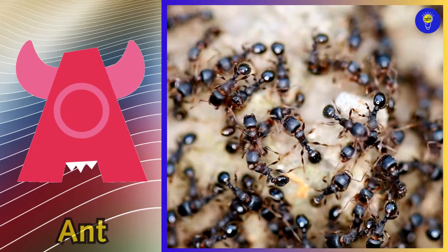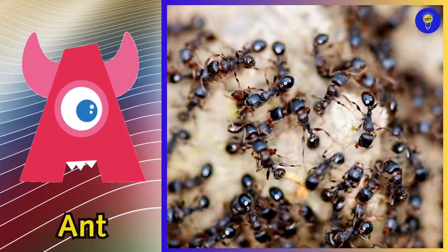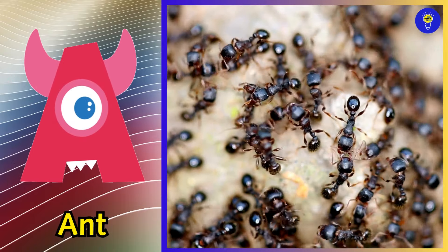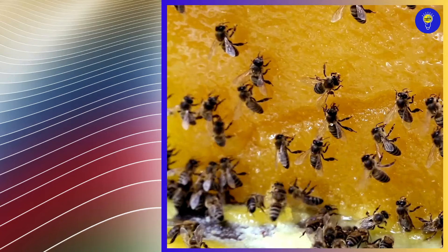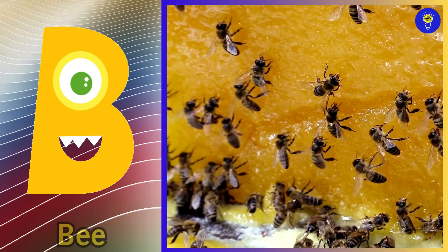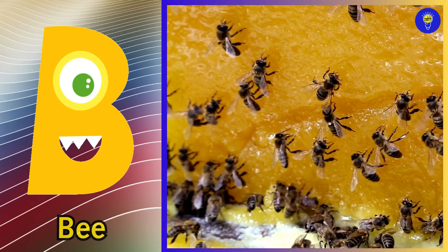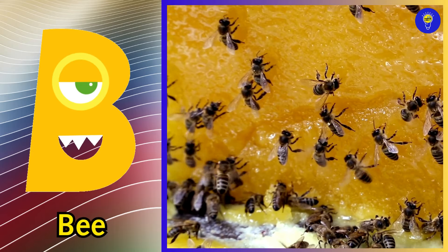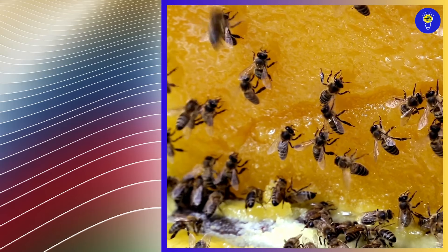A is for ant, a, a, ant. B is for bee, b, b, bee.